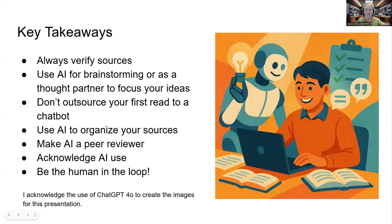We've covered a lot of ground here. If you choose to use AI tools, remember to verify any information or sources they give you. Try using AI as a thought partner to focus your ideas. Don't outsource your first read to a chatbot. Use AI to organize your sources. Have AI be a peer reviewer. And finally, be transparent and acknowledge your AI use. Always remember to be the human in the loop, and you'll be able to use AI tools effectively as powerful research assistants to make your work better.